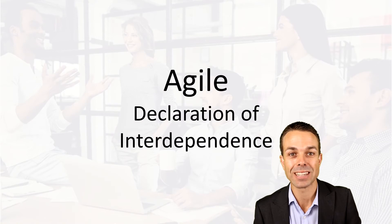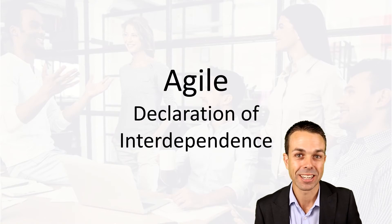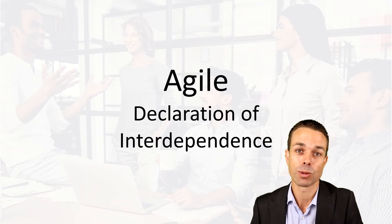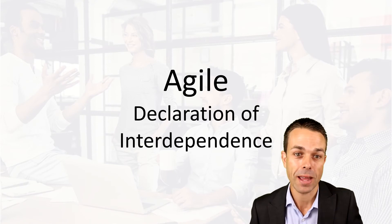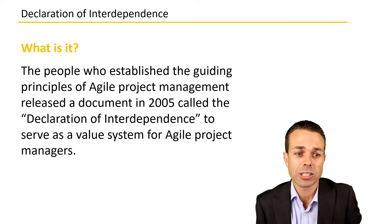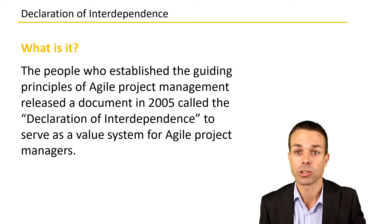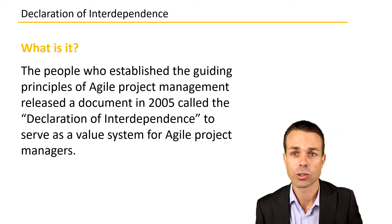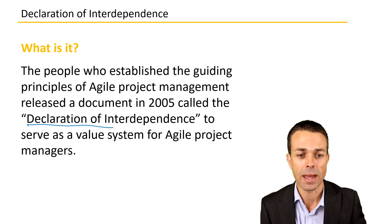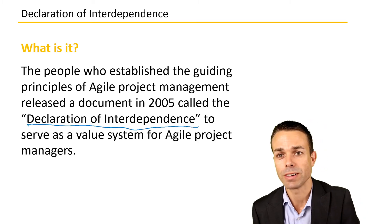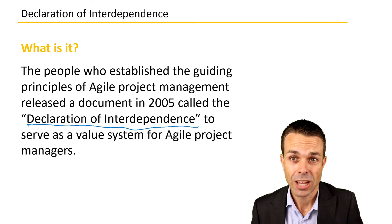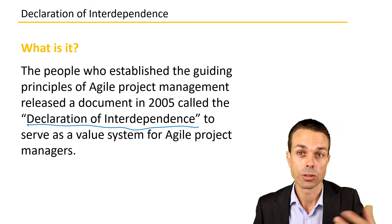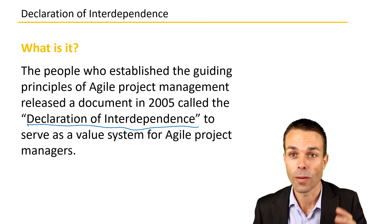Hi everyone, welcome to this series on Agile for the Agile Certified Practitioner, a great way to jump deeper into Agile methods and really figure out what it's all about. This one we're looking at is the Declaration of Interdependence. The people who established the guiding principles of Agile project management released this document in 2005 — the original document was in 2001 — and it serves as a value system for Agile project managers.